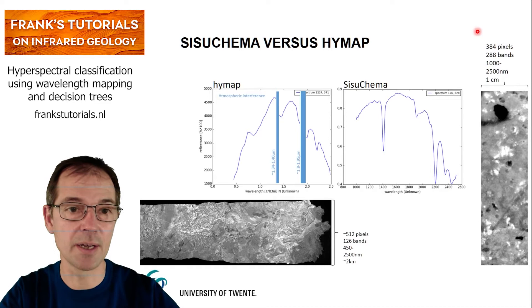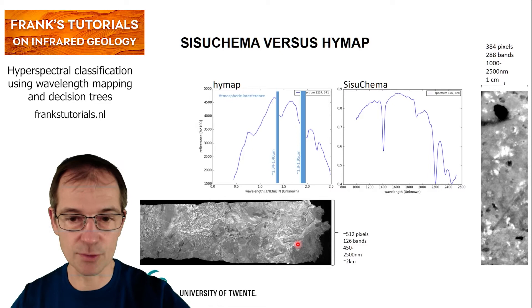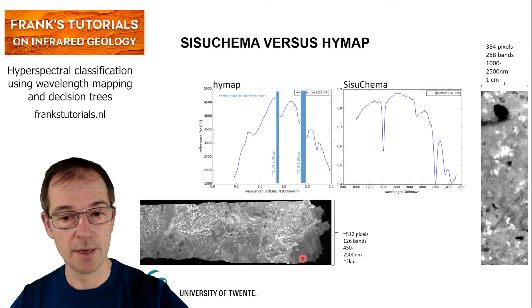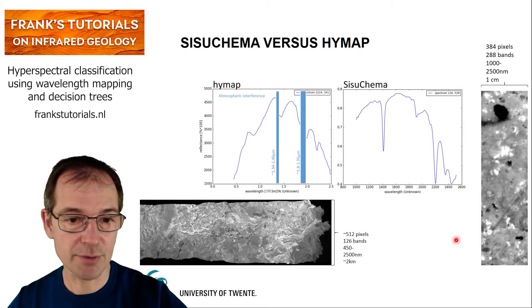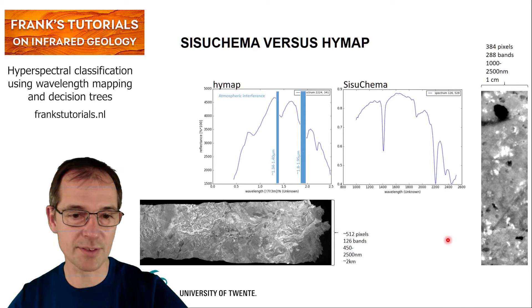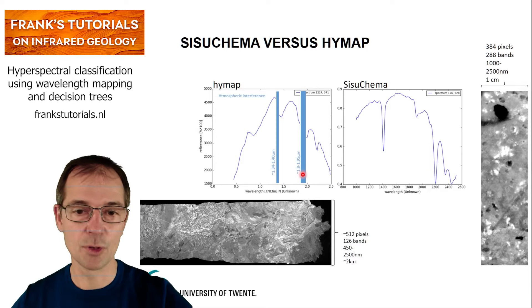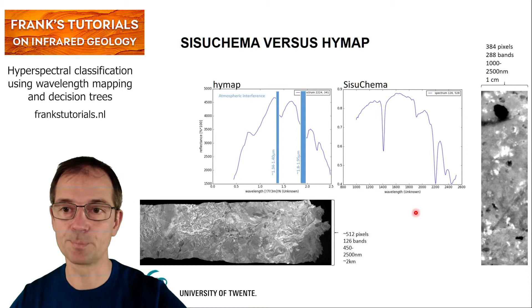Here we compare the SISU-KEMA versus HiMap systems. The HiMap image has 512 pixels across, resulting in a width of about two kilometers depending on pixel size and flight altitude, compared to the SISU-KEMA image which is one centimeter across. The spectra are somewhat similar but also different because the wavelength ranges differ. The HiMap sensor includes the visible and near-infrared, and on Earth the water feature and OH features are obscured by the atmosphere — which is not the case when measuring in the laboratory with the SISU-KEMA system.